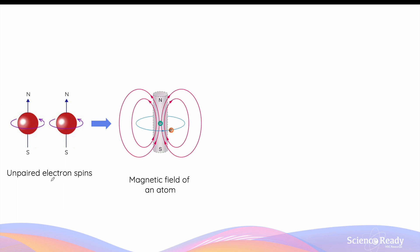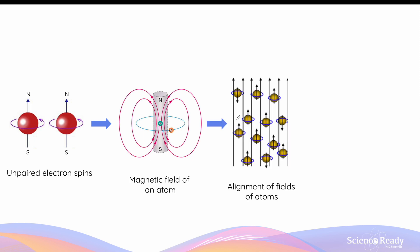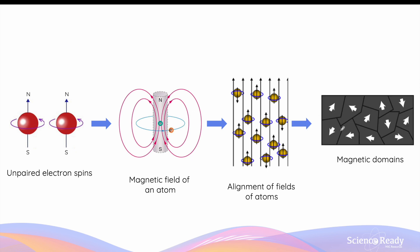By way of review: fundamental particles like electrons have a property called spin, which causes them to act as small magnets and produce their own magnetic fields. In ferromagnetic materials like iron, unpaired electron spins cause the atom itself to become a magnet. When multiple atoms align in the same direction, the magnetic field becomes stronger — this is a magnetic domain. A material with randomly orientated domains is unmagnetized; when domains align in the same direction, the material becomes magnetized.